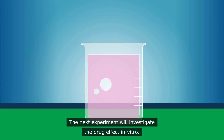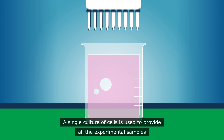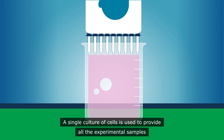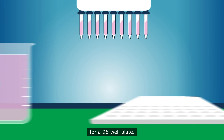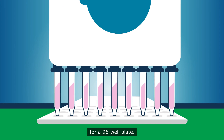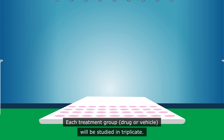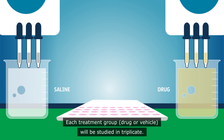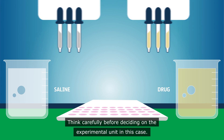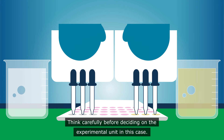The next experiment will investigate the drug effect in vitro. A single culture of cells is used to provide all the experimental samples for a 96-well plate. Each treatment group — drug or vehicle — will be studied in triplicate. Think carefully before deciding on the experimental unit in this case.